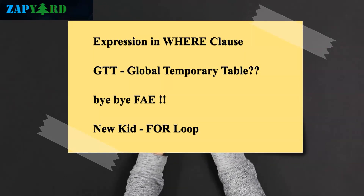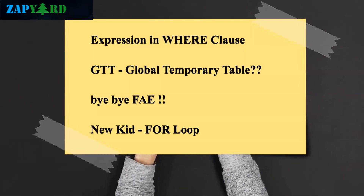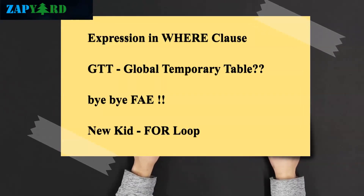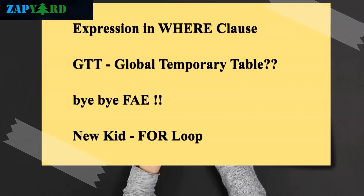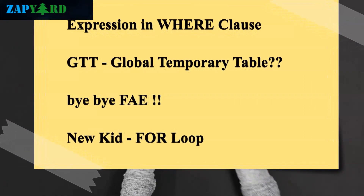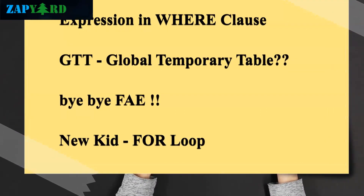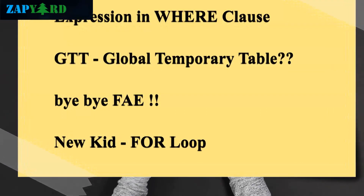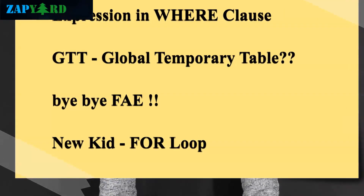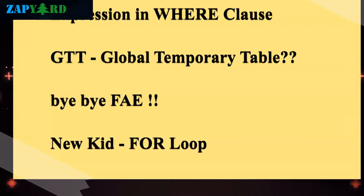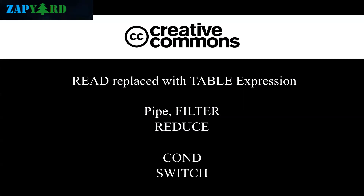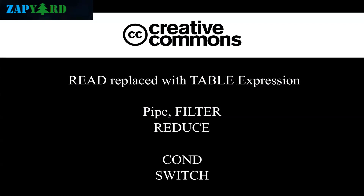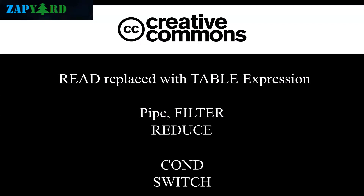Do you know about global temporary tables? We will introduce you to GTT, or global temporary tables, if you do not know it yet. Developers can also say goodbye to FOR ALL ENTRIES in new ABAP if they want — we will learn how. LOOP AT has a tough competitor in the form of the FOR loop, and the trainer will show real project usage of the FOR loop in dynamic data handling. The world-famous READ TABLE statement can be replaced with table expressions, and we will make use of these expressions throughout our course and assignments.